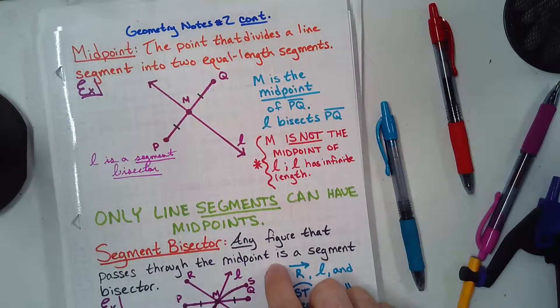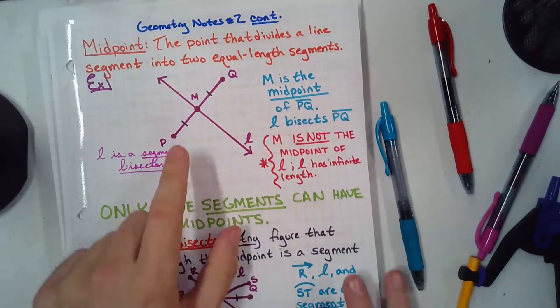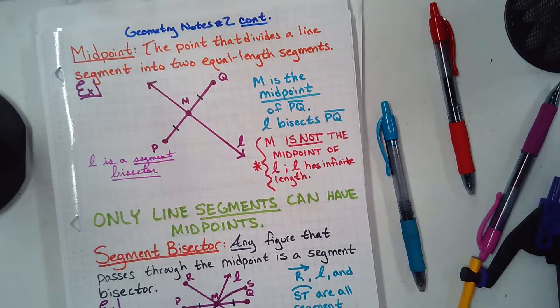So, L cuts PQ. It bisects. It cuts it into two equal pieces. M is the midpoint of PQ, line segment PQ. L bisects PQ. It's the thing doing the cutting. It's the proverbial pizza cutter. Mamma mia!